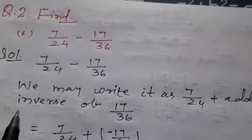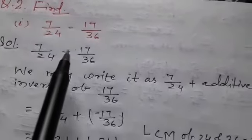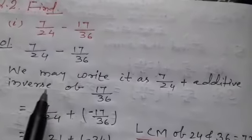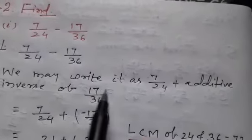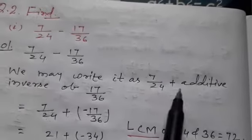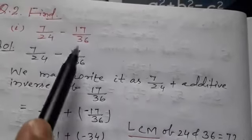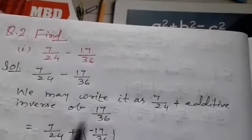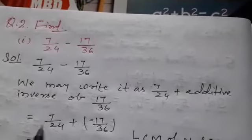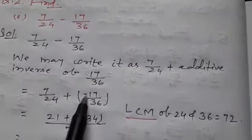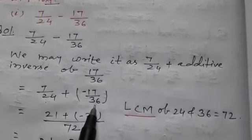Next: find 7/24 minus 17/36. We may write it as 7/24 plus the additive inverse of 17/36, so we write 7/24 + (−17/36).